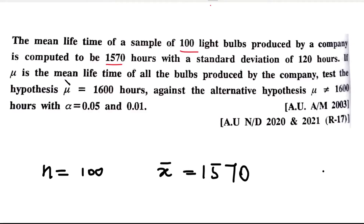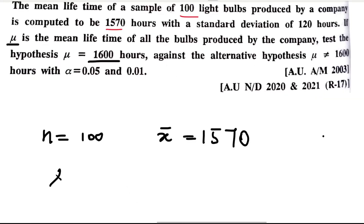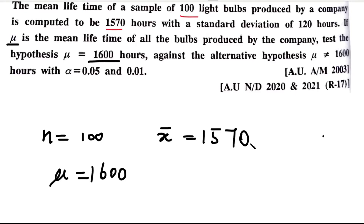If mu is the mean lifetime of all the bulbs produced by the company, the population mean mu is equal to 1600. And the standard deviation sigma is 120.